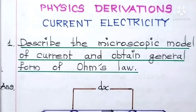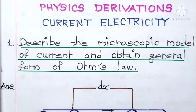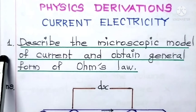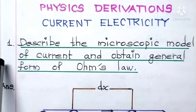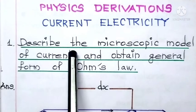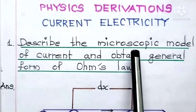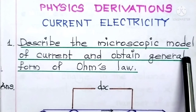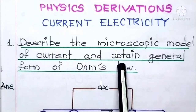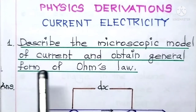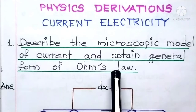Today in this video, we are going to see the first derivation. This is part 1 of this video series. Come on, let us continue with our studies. Question number 1: Describe the microscopic model of current and obtain the general form of Ohm's law.